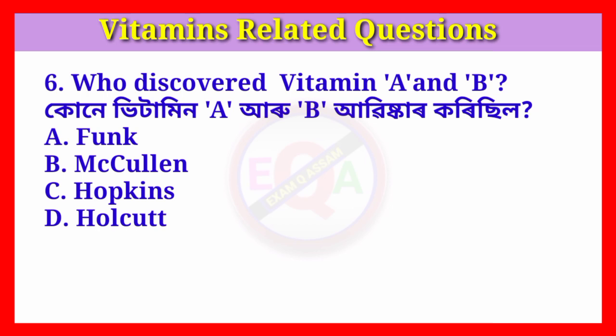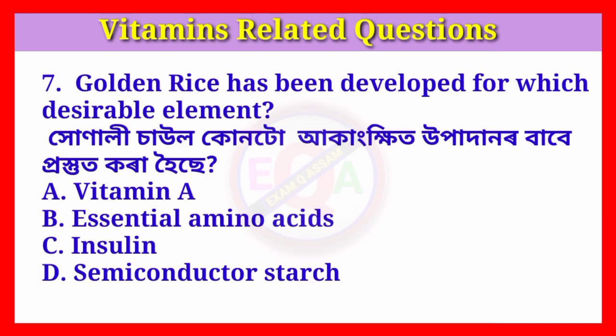Answer: Option B, McCollum. Question number seven: Golden rice has been developed for which desirable element?